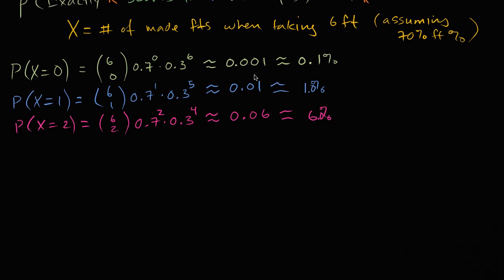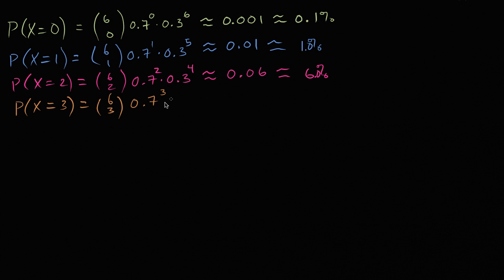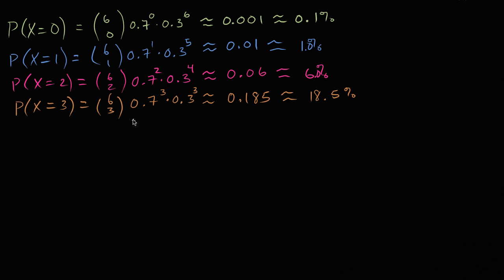So the probability that our random variable is equal to three is going to be six choose three, times 0.7 to the third power, times 0.3 to the third power, which is approximately 0.185, or 18.5%. That's definitely within the realm of possibility — it's starting to be a non-insignificant probability.